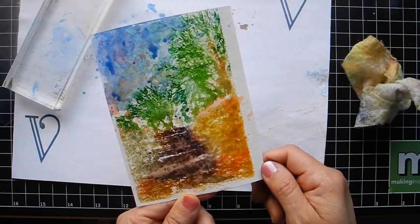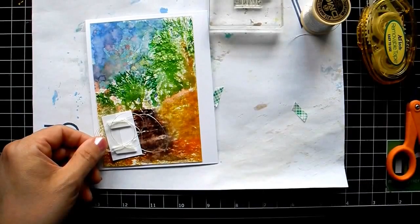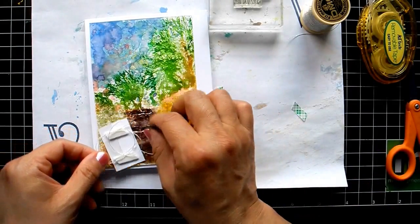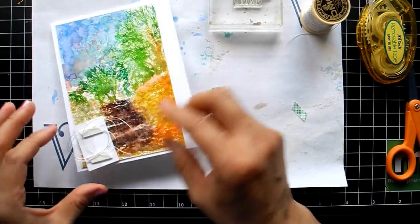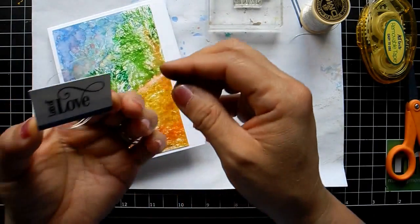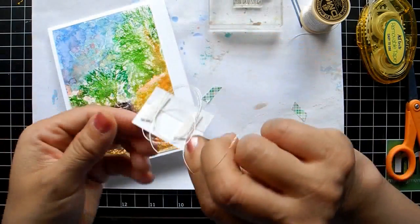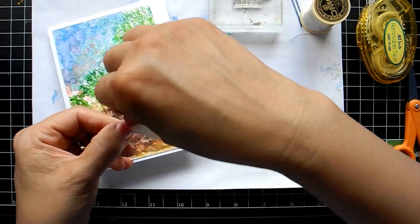So we're down to the final stages of putting the card together. And I have stamped 'lots of love' and made a little nest of strings.